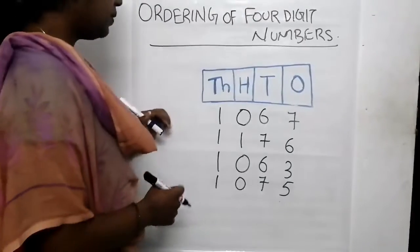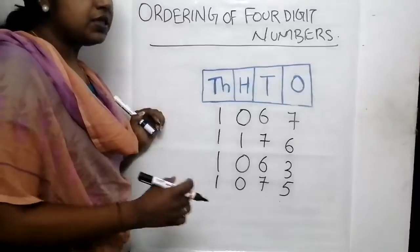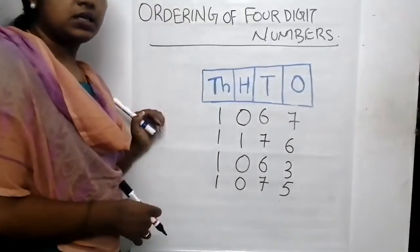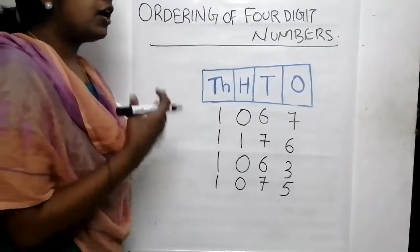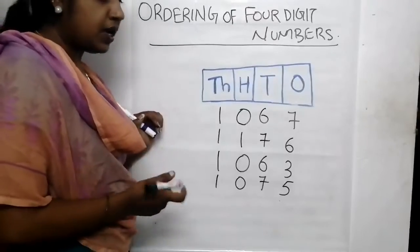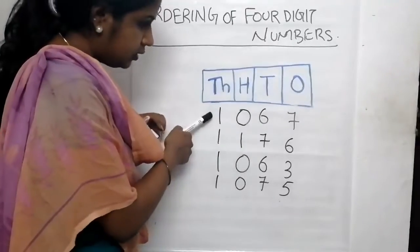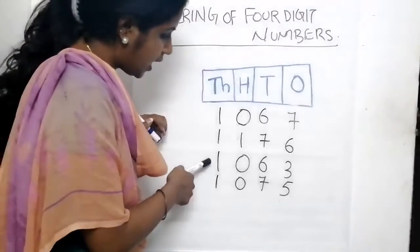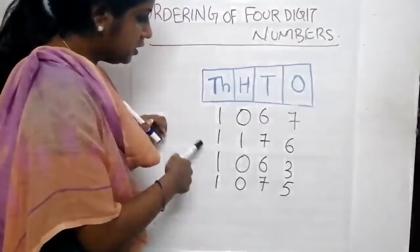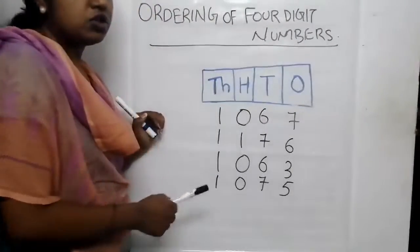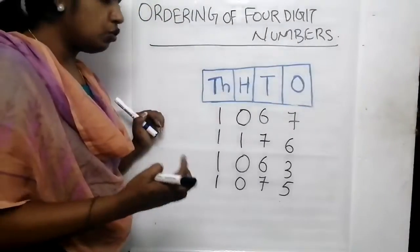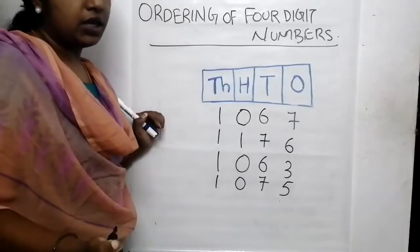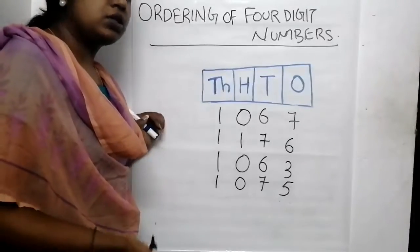Let's find. First, we have to check the thousands place. What are the numbers in the thousands place? Here it is 1, here it is again 1, here it is again 1, here it is again 1. All the numbers are same, so we cannot compare those numbers.